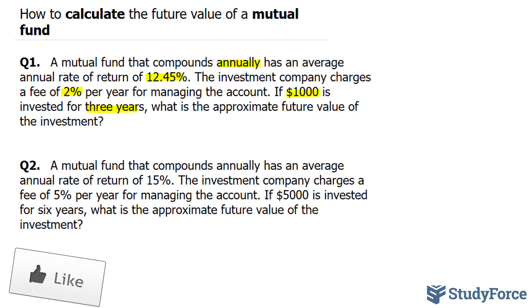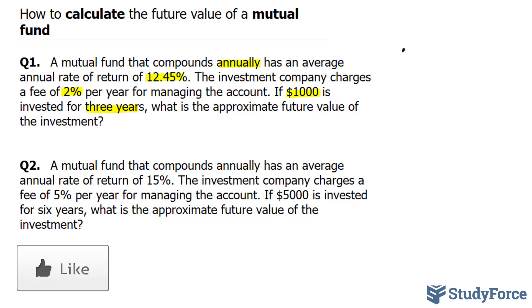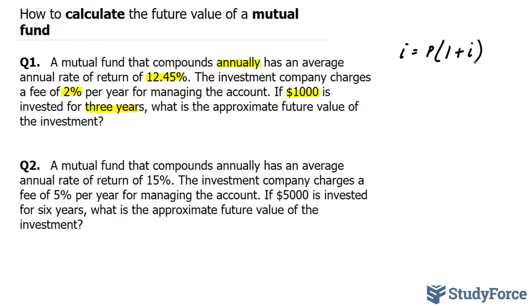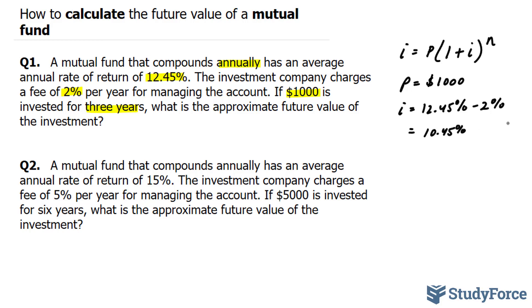The formula we'll be using here is the compound interest formula: FV = P(1 + i)^n. Our present value P is equal to $1,000. i is equal to 12.45% minus 2% that the investment company takes away, so this equals 10.45%. We convert this to decimal by dividing by 100, giving us an i value of 0.1045.